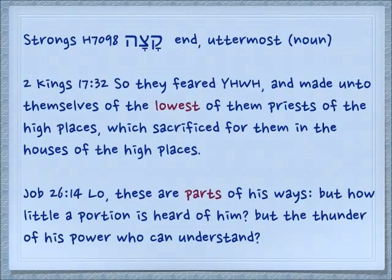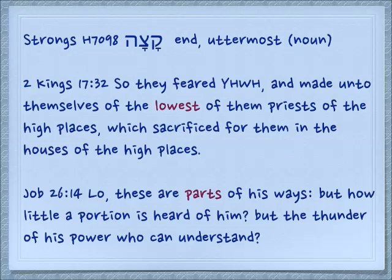Katsa is also a noun. 2 Kings 17:32 — So they feared Yehovah and made unto themselves of the lowest of them priests of the high places, which sacrificed for them in the houses of the high places — it's the lowermost part. Job 26:14 — Lo, these are parts of his ways, but how little a portion is heard of him; but the thunder of his power, who can understand? The end of something is just a part of it, not the whole thing.